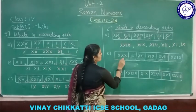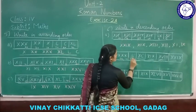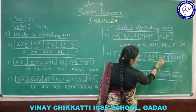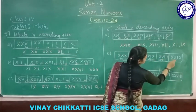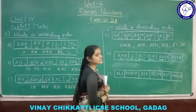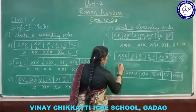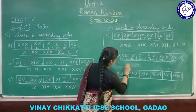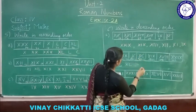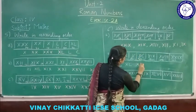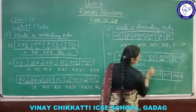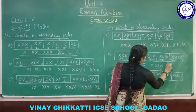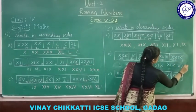Next set for descending order: convert the Roman numerals — X X X is 30, L is 50, L minus X is 40, X I X is 19, X V I I I is 18, and X X I X is 29. Find the greatest: 50 (L) first, then 40 (X L), then 30 (X X X), then 29, then 19, then 18.